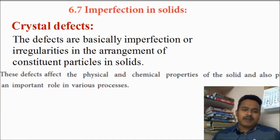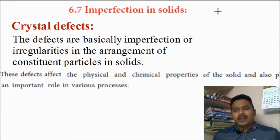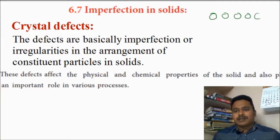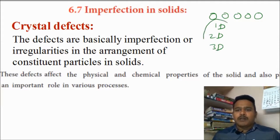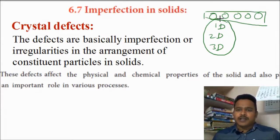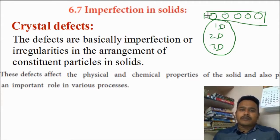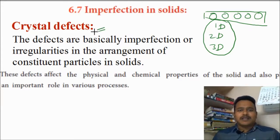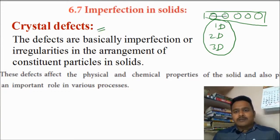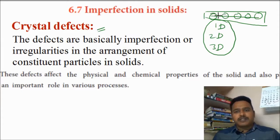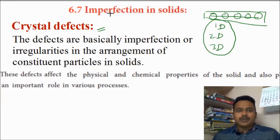What are these crystal defects? Whenever a crystal is forming — we discussed how the crystal is forming, how the atoms are arranged in a crystal in one-dimensional, two-dimensional, and three-dimensional formats — now we are going to discuss about crystal defects. Crystal defect means whatever atoms are there in the crystal, if they are not arranged properly, that means imperfection of arrangement of atoms in the solids leads to crystal defects.